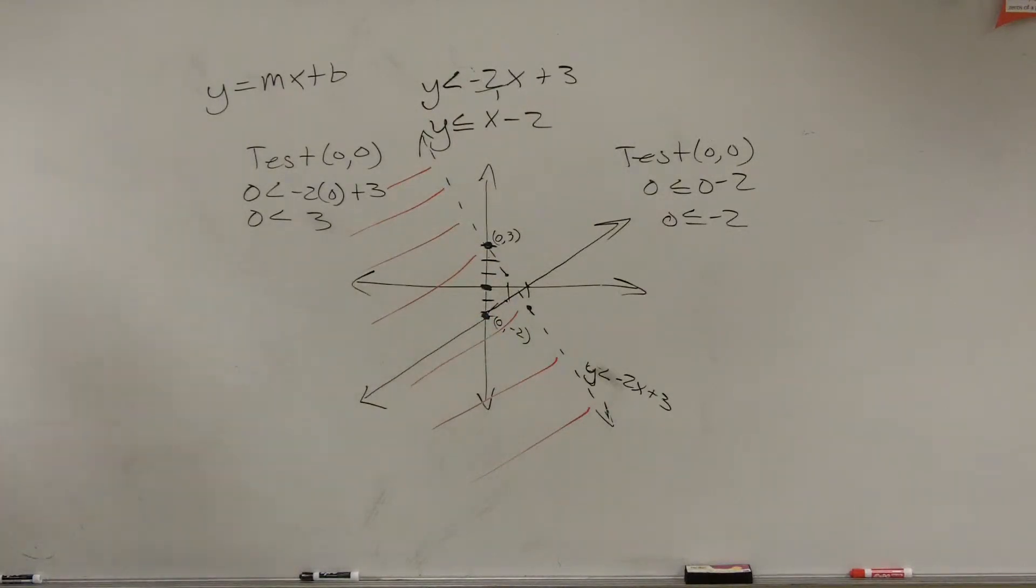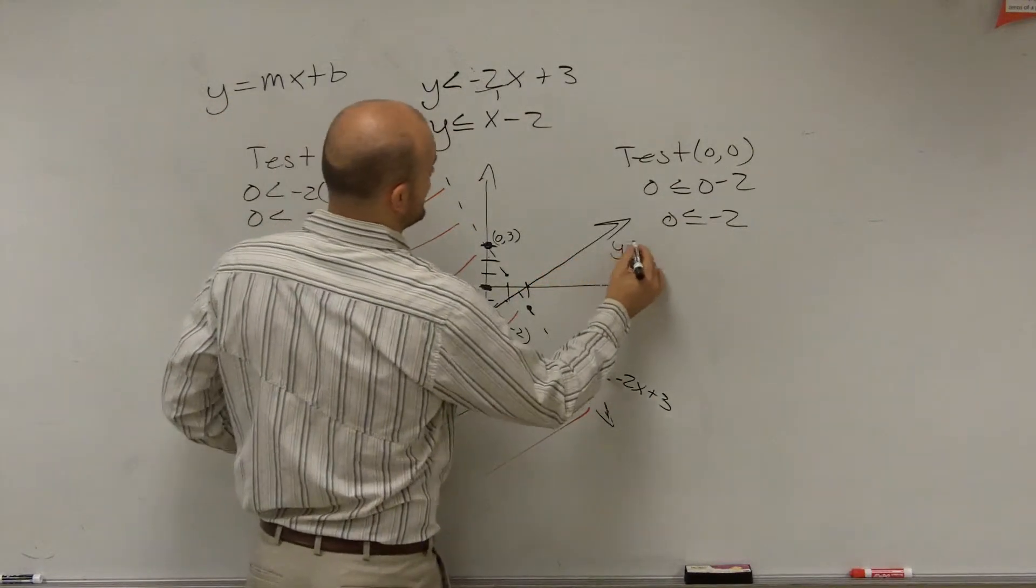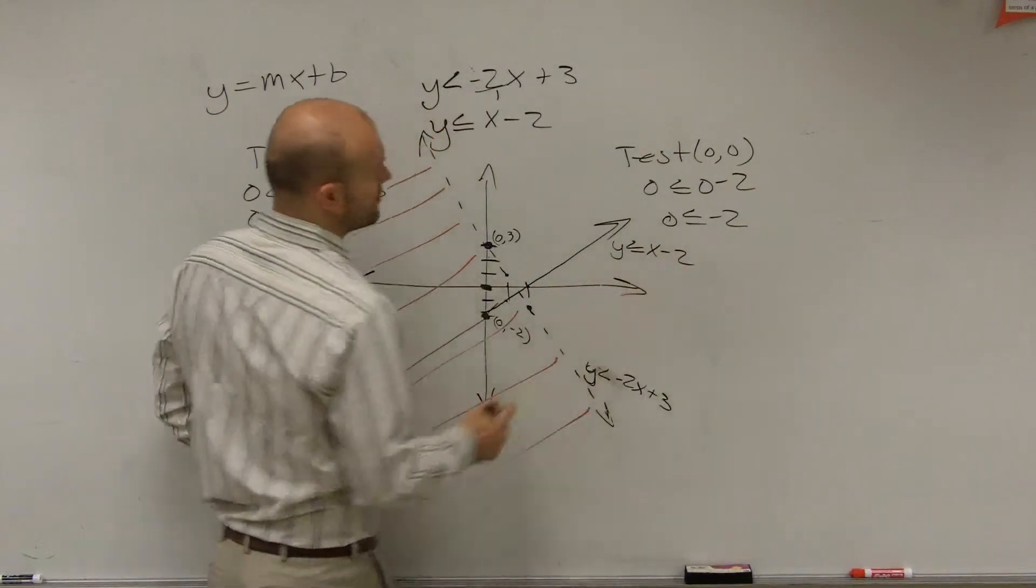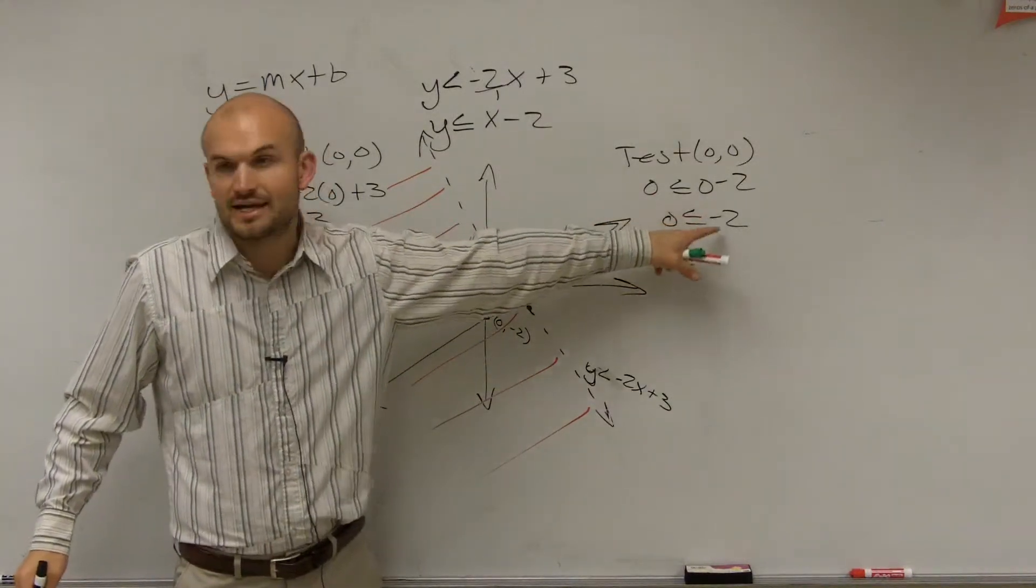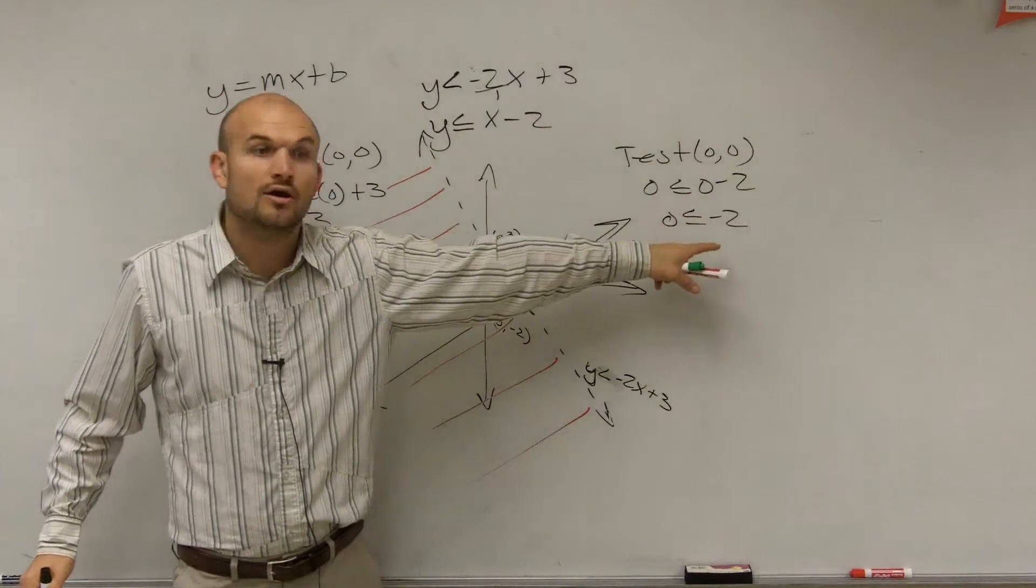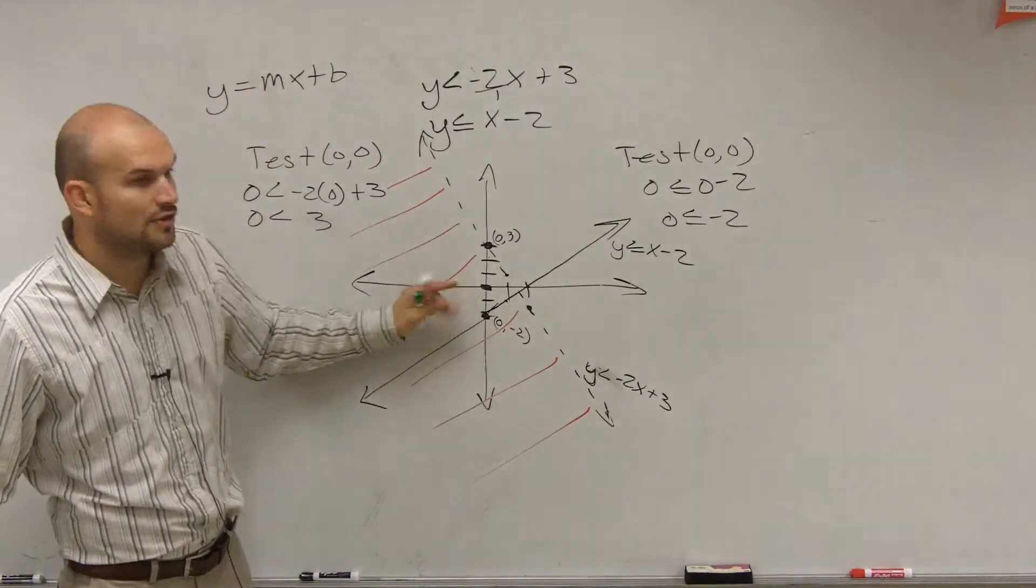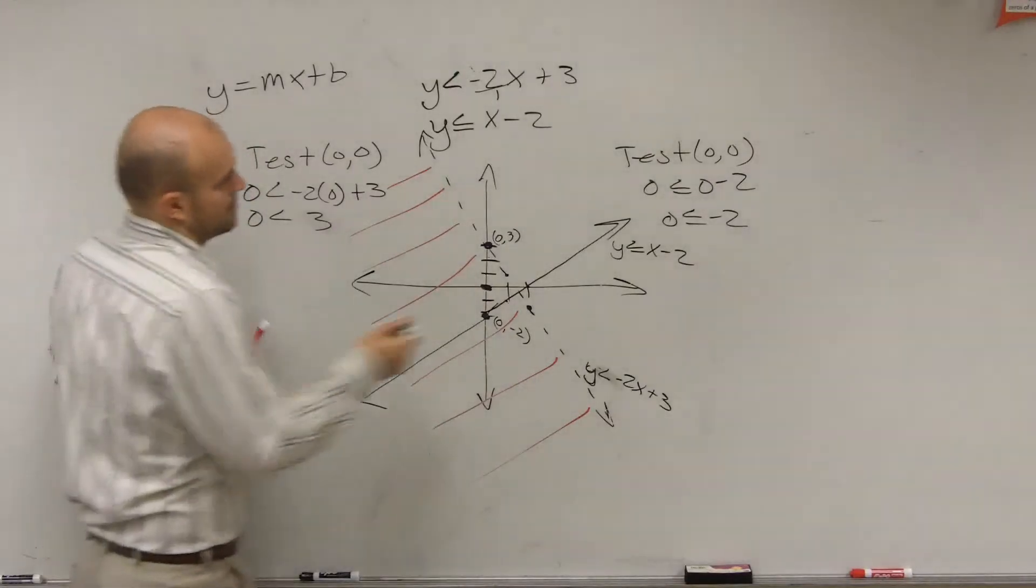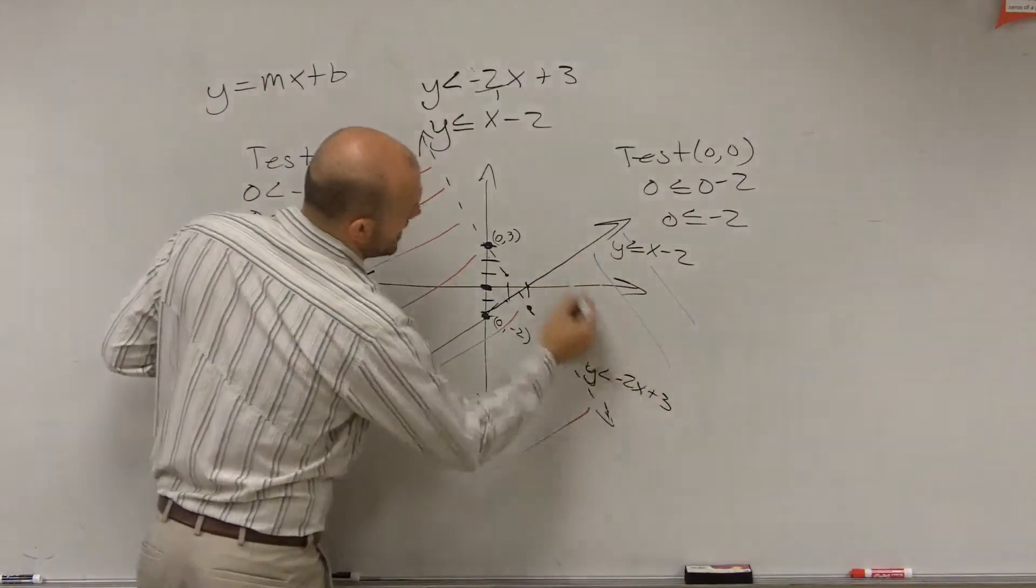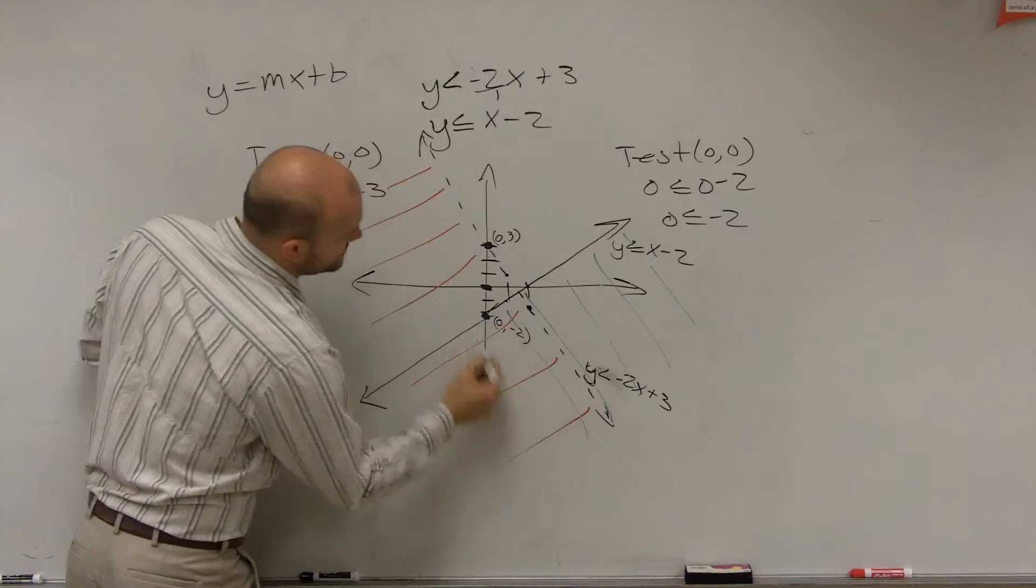Then we look at our next line, which is right here, which was y is less than or equal to x minus 2. When I test 0, 0, I get 0 is less than or equal to negative 2. Is that true or false? False. So that means since that point's false, that means all the lines now on the other side are going to be true. So you graph all the lines on the other side of 0, 0.